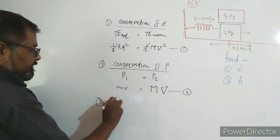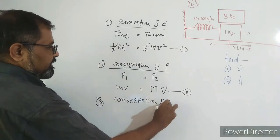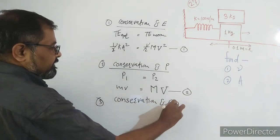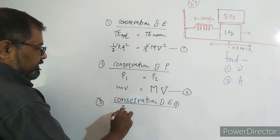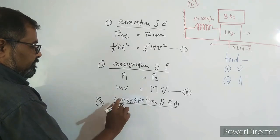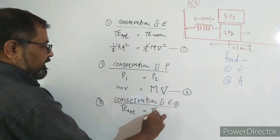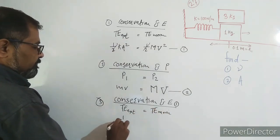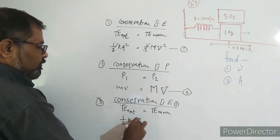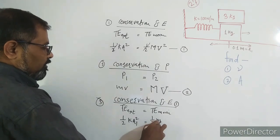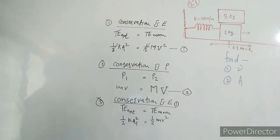We use conservation of energy for the initial case (before the block is placed). The total energy at the extreme position equals the total energy at the mean position. At extreme: (1/2)kA² = (1/2) × mass × v₀². We use the initial amplitude A = 0.1 m and mass = 1 kg.